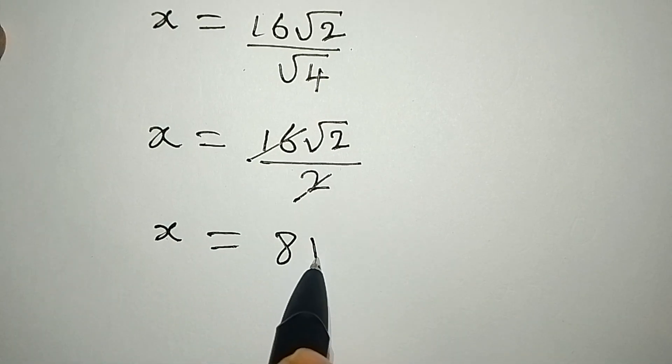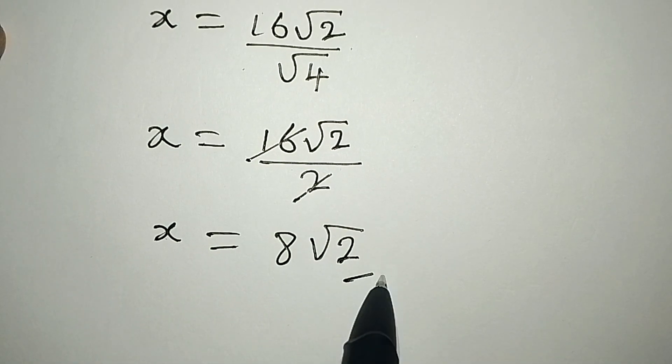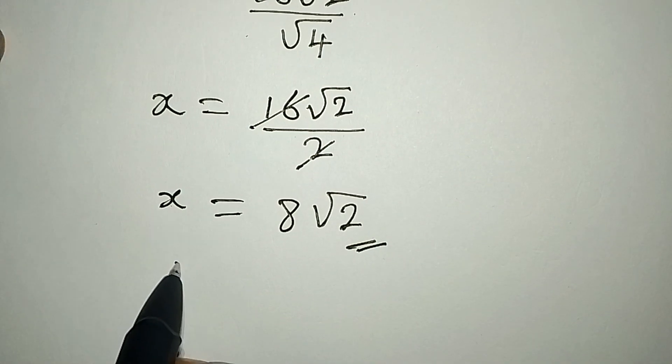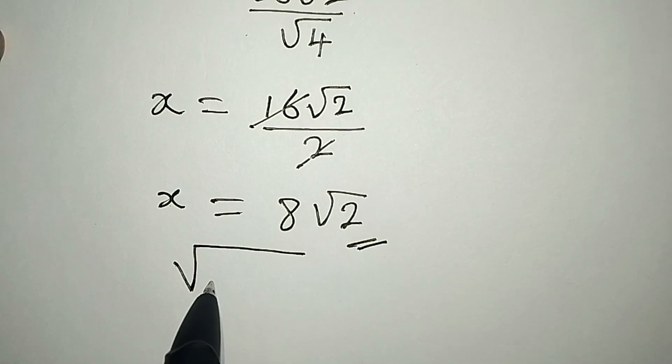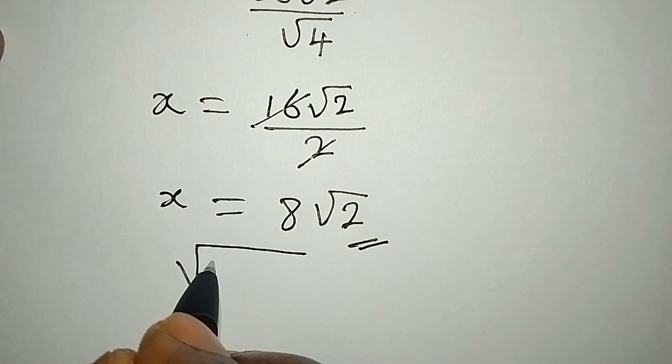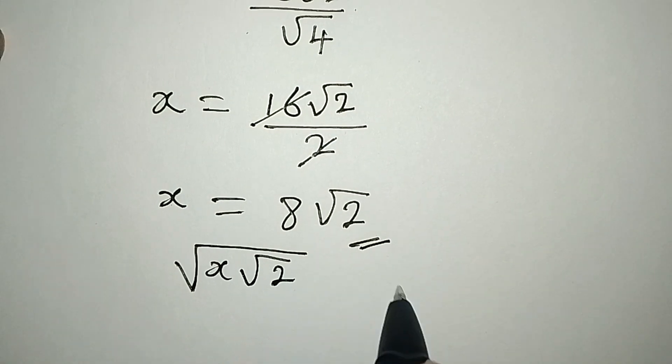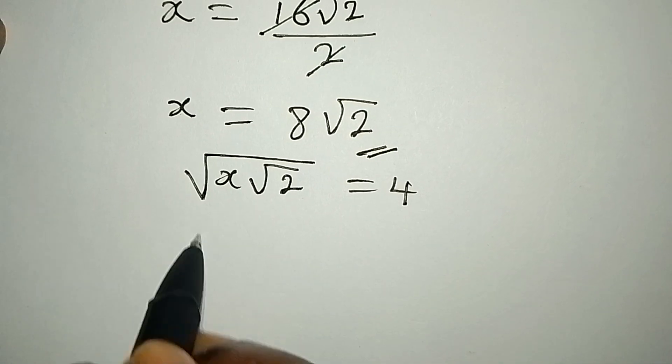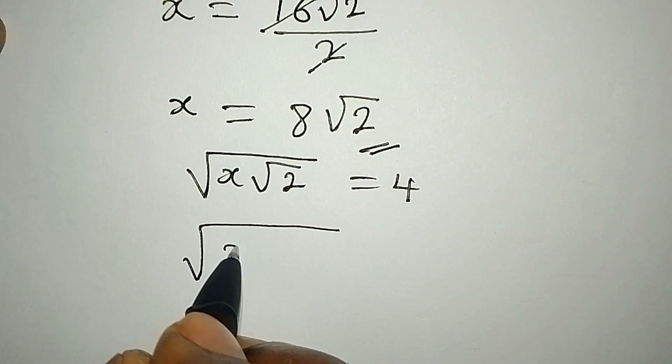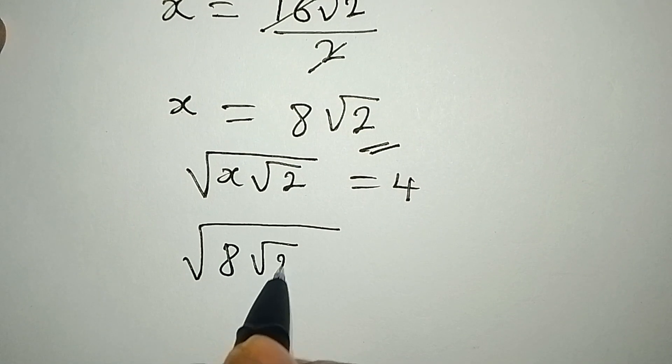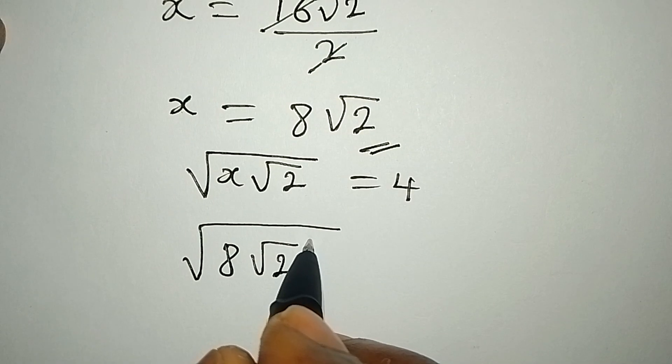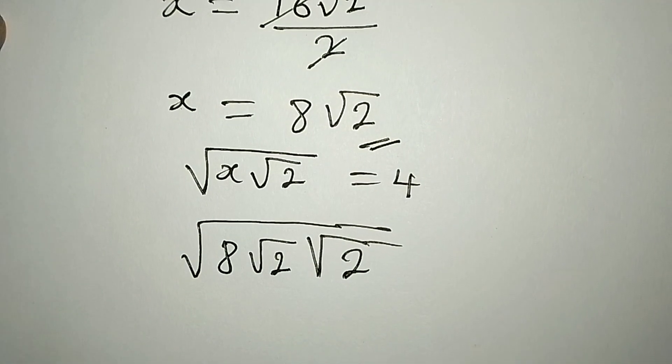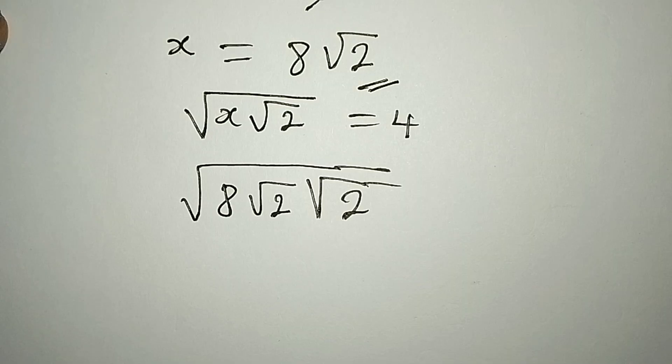So this is the value of x. Now let me put this back into the equation and see if I'll have the right answer. On the right hand side we have x root 2 root 2 equals 4. So in place of x let me put in this. We have 8 root 2, then we have additional root 2. So will this give us 4 at the end of the day? That's what we are looking at.